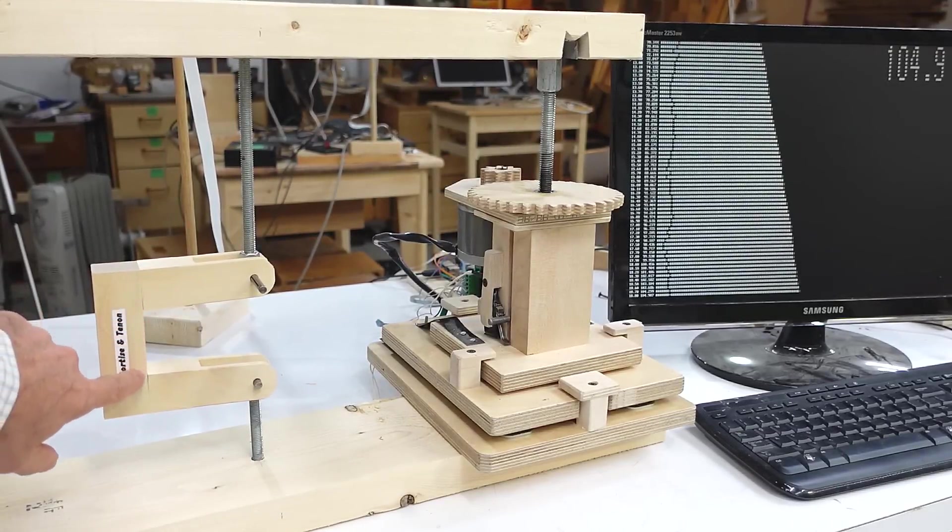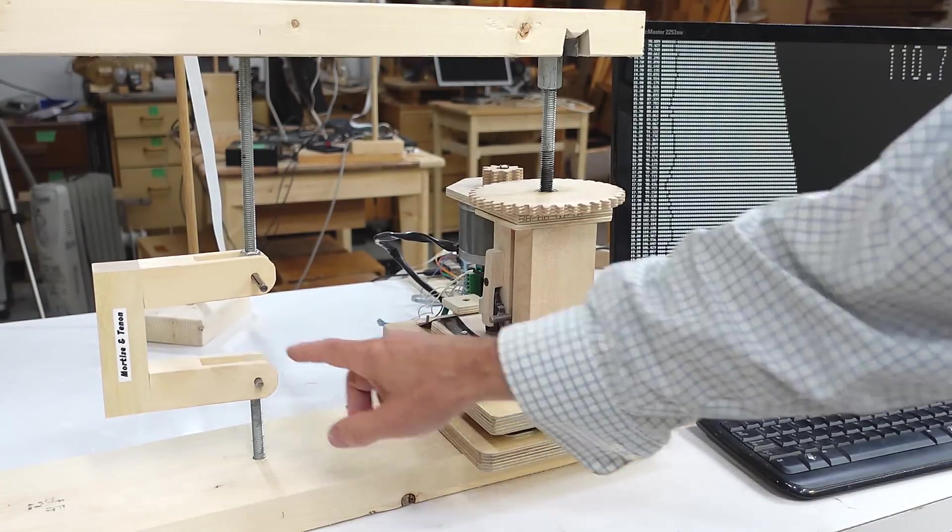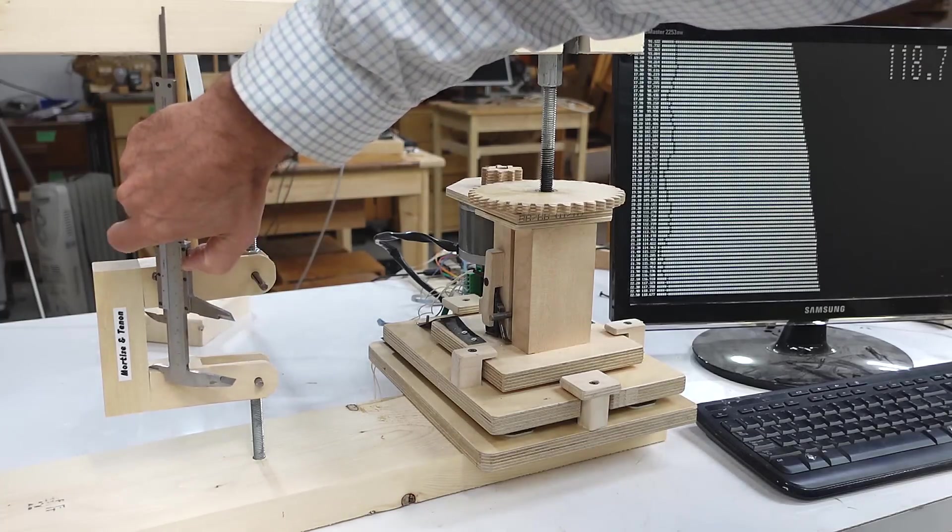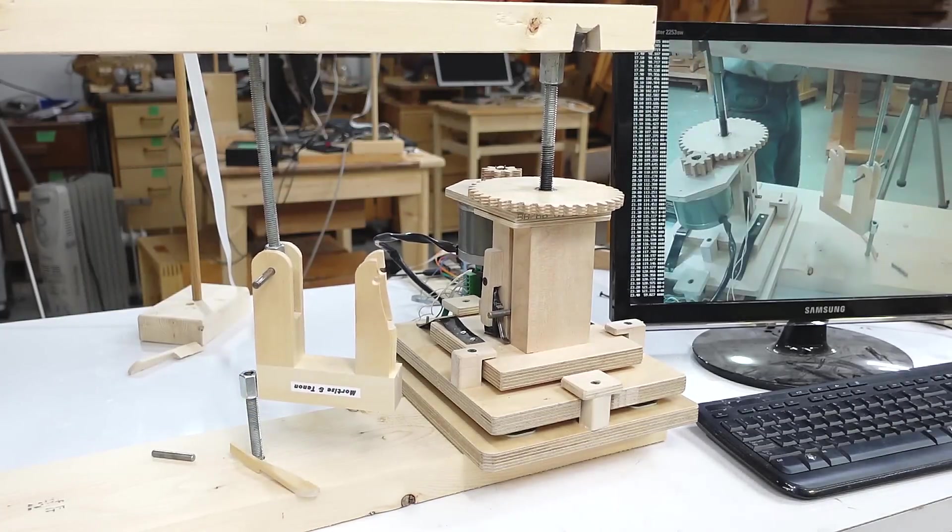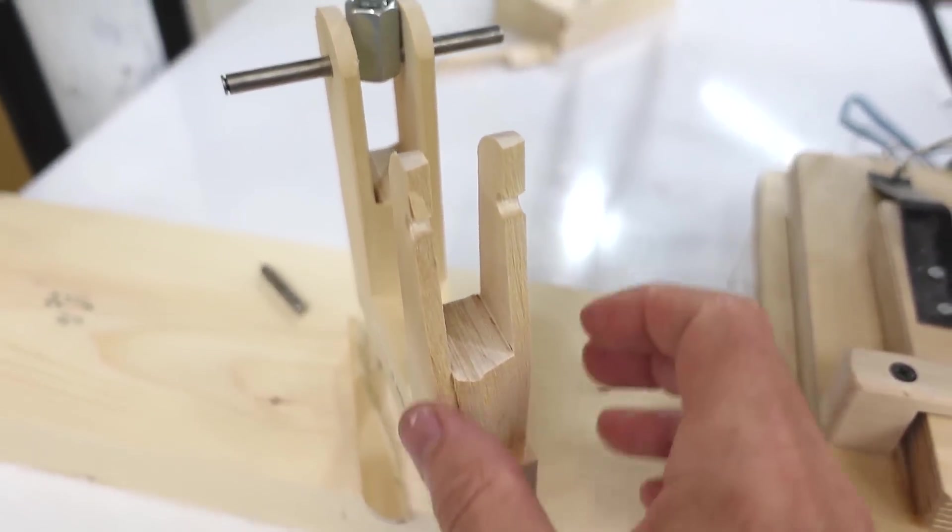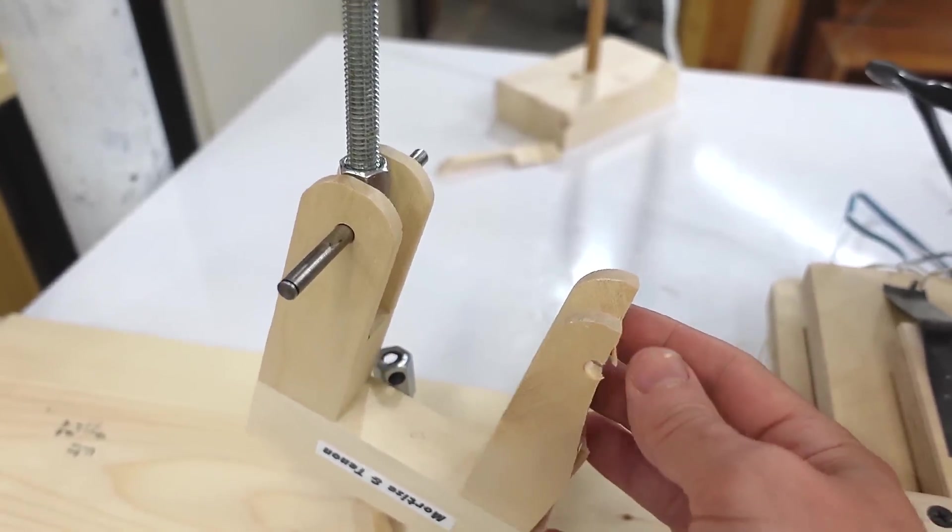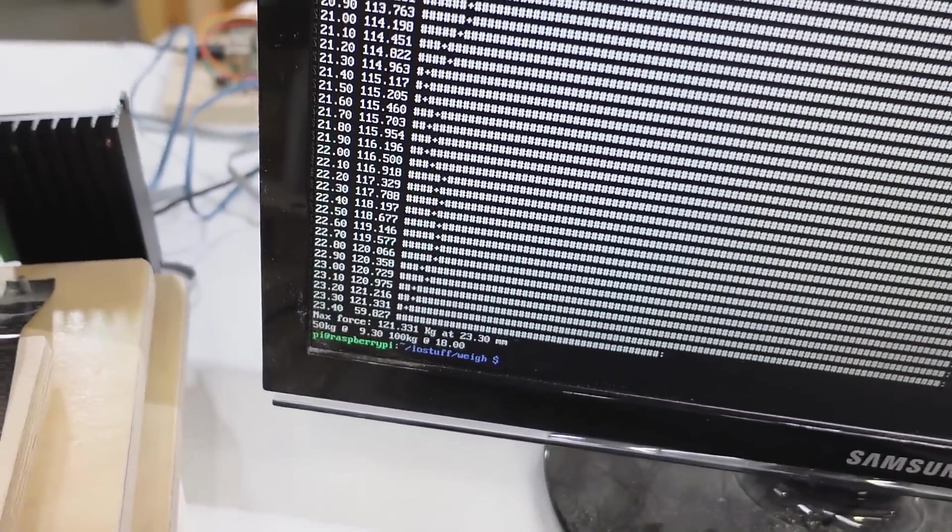I can hear some creaking. Definitely seeing quite a bit of flex there now. Yeah, that's bent outwards by quite a bit there. So, it's opened up by this much. Whoa! Now, the failure wasn't the joint at all it was just the wood right here. And the fail strength was 121 kilograms.